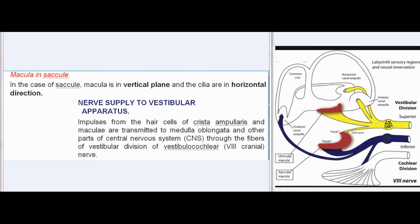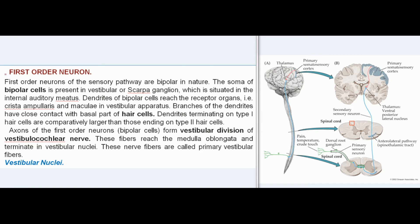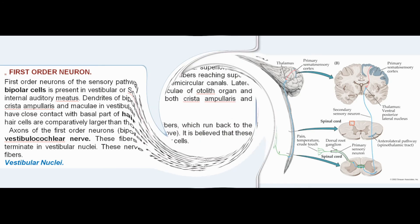Impulses from the hair cells of the crista ampullaris and macula are transmitted to the medulla oblongata and other parts of the central nervous system through the vestibular division of the vestibulocochlear nerve. The first-order neurons are bipolar in nature. Their soma is present in the vestibular (Scarpa's) ganglion, situated in the internal auditory meatus. Dendrites reach the receptor organs; branches have close contact with the basal part of hair cells. Axons form the vestibular division of the vestibulocochlear nerve, reach the medulla oblongata, and terminate in the vestibular nuclei. These fibers are called primary vestibular fibers.